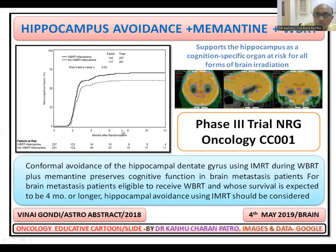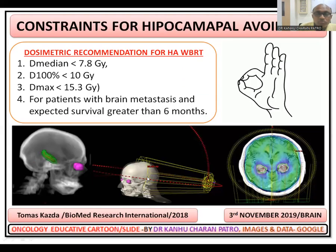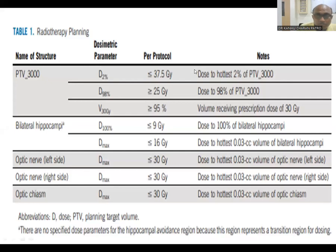To contour all these structures, follow the RTOG protocol or NRG CC001 protocol. If you want to use Mementin, start at 20 milligrams per day within three days of the initial session of radiotherapy and continue for 24 weeks. The dose constraints are: D median is 7.83 Gy, D100% less than 10 Gy, and D max is 15.3 Gy. These constraints apply to patients having survival more than six months.